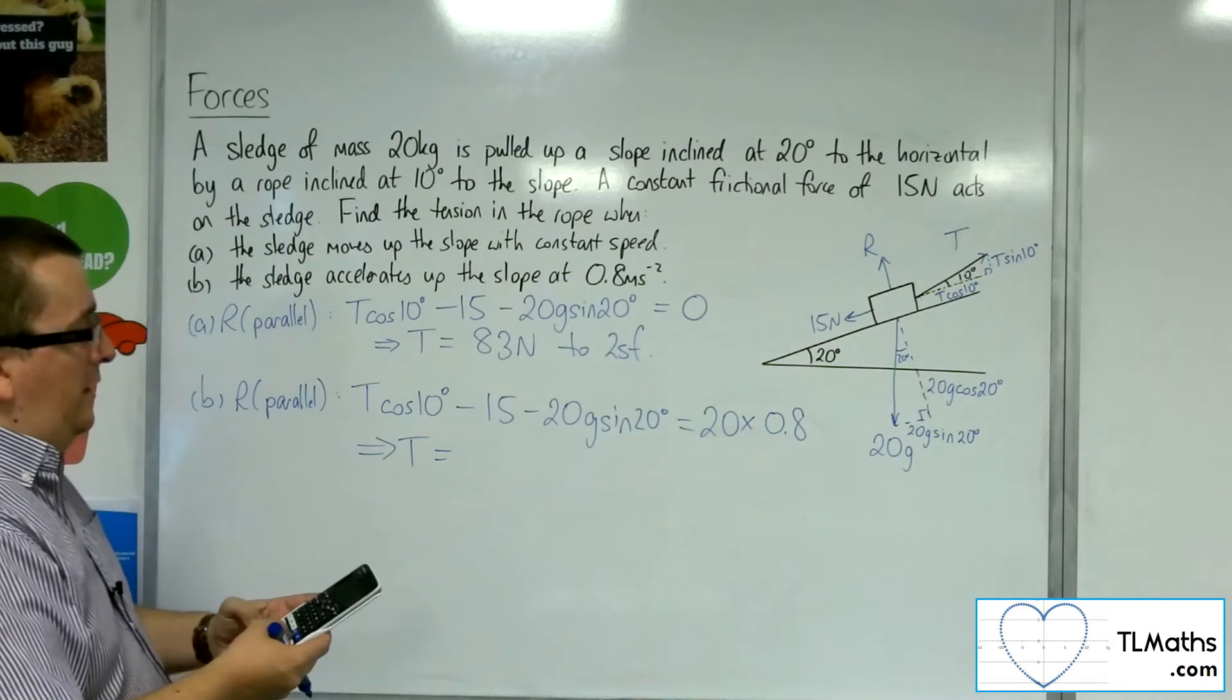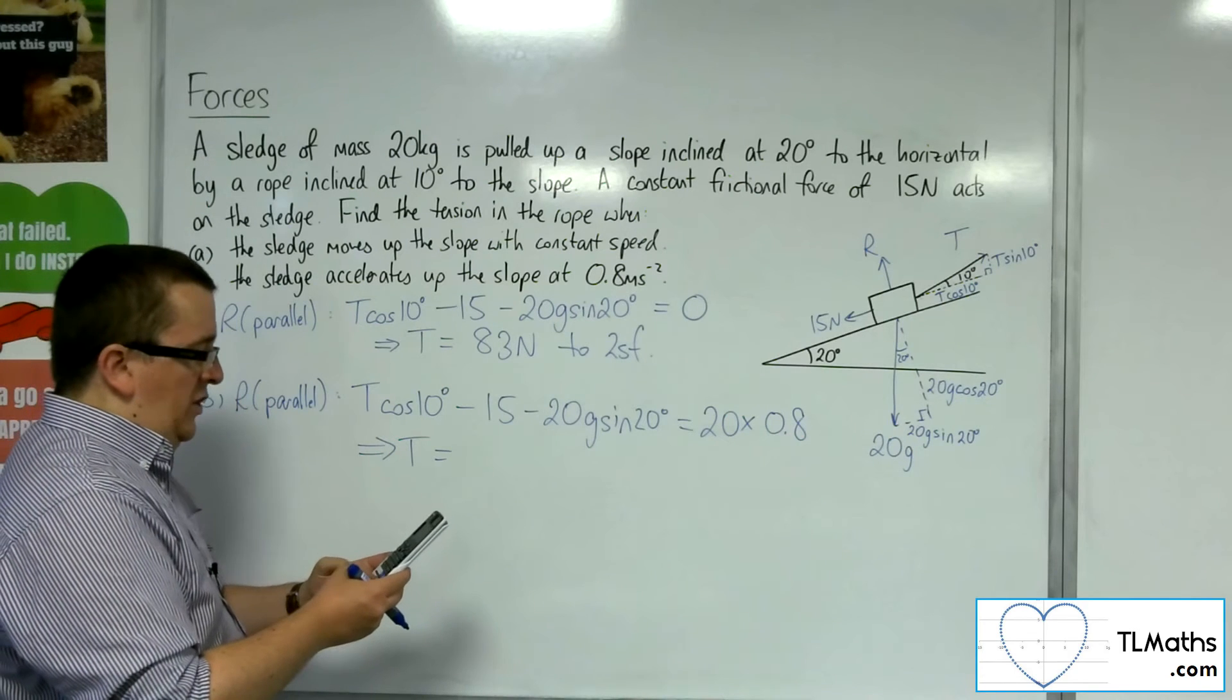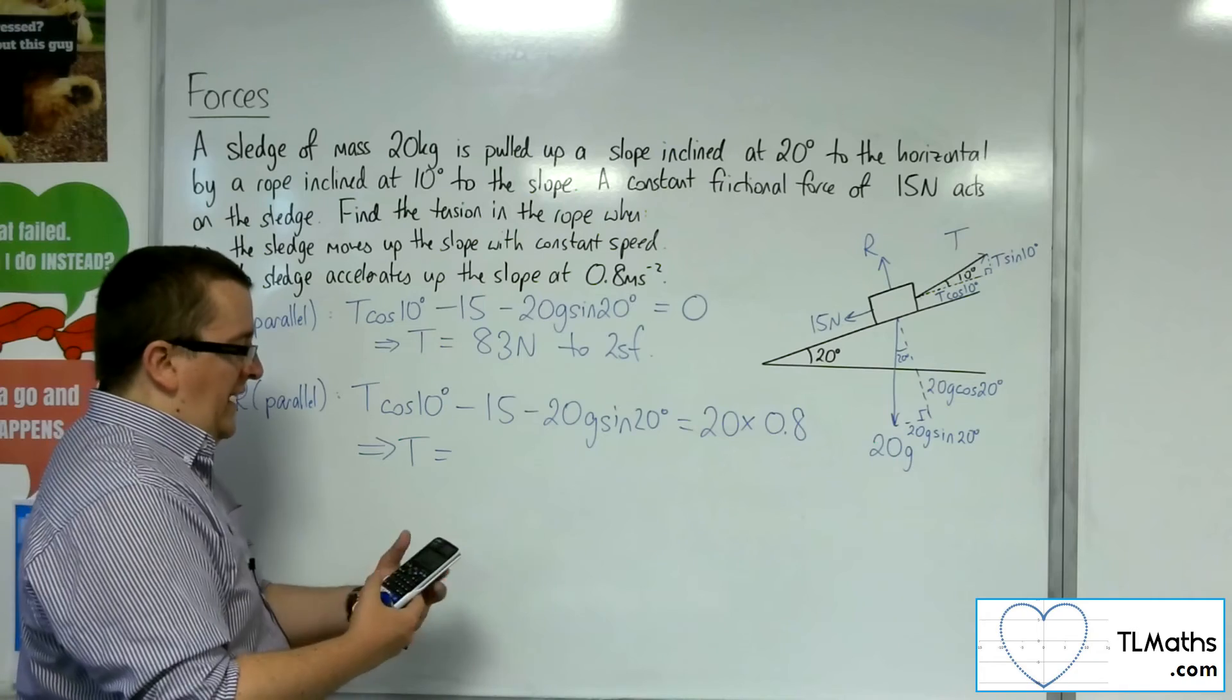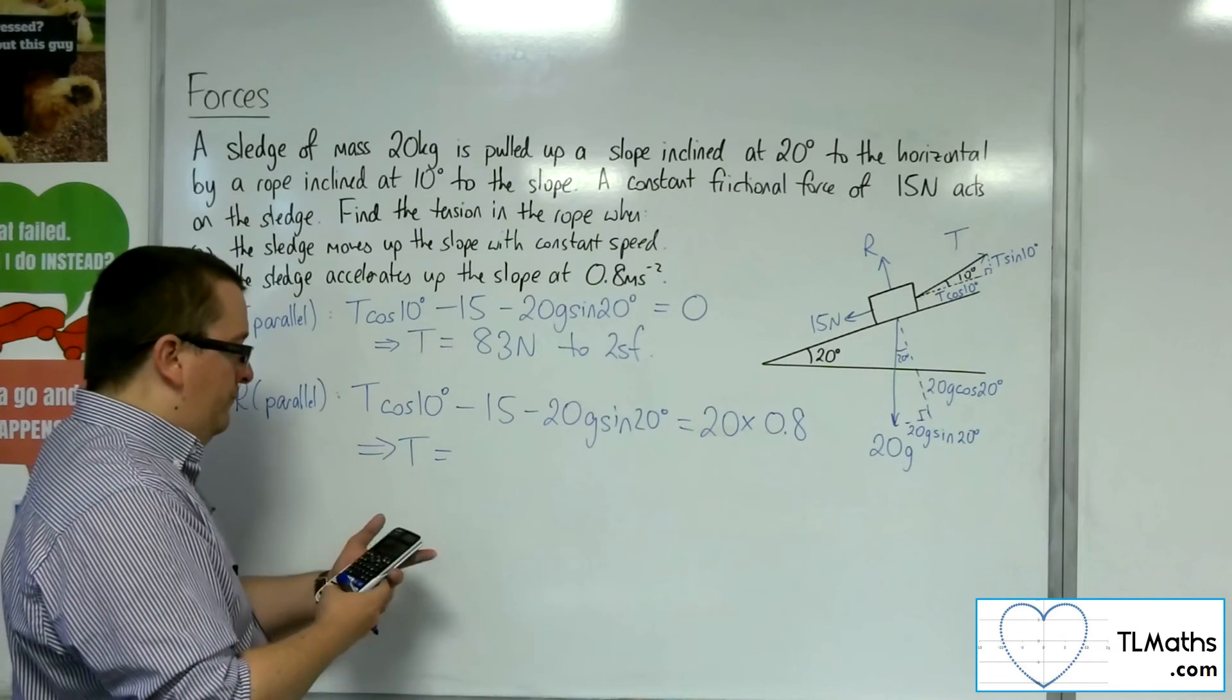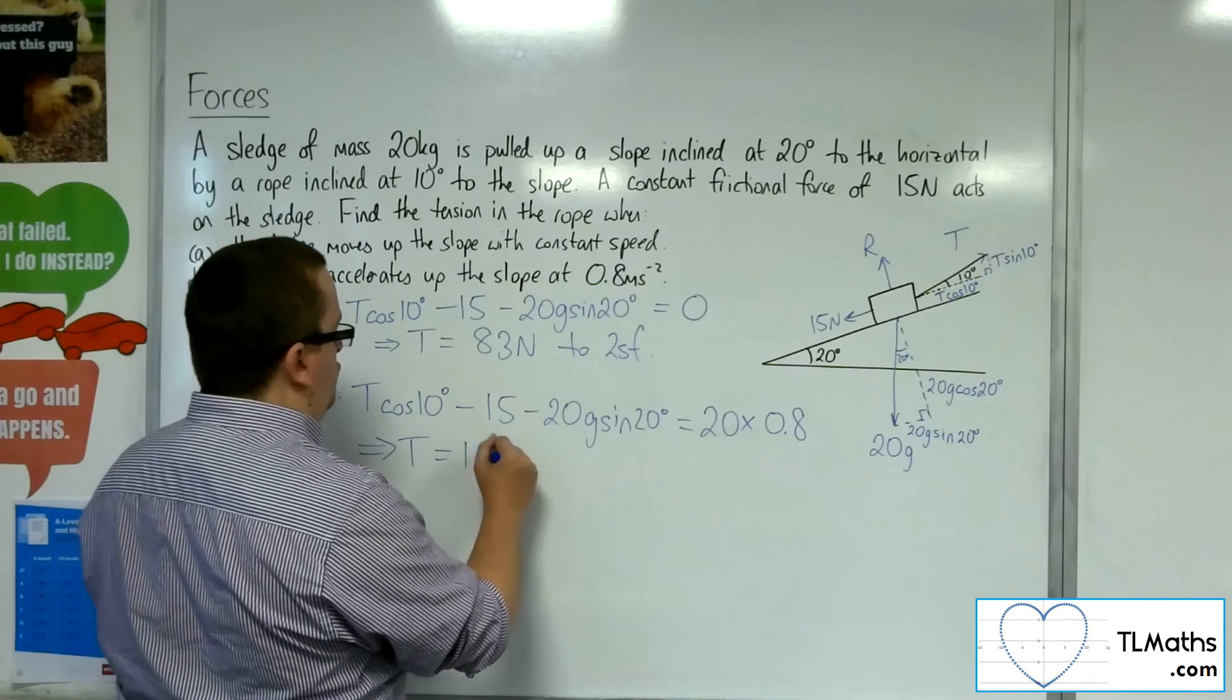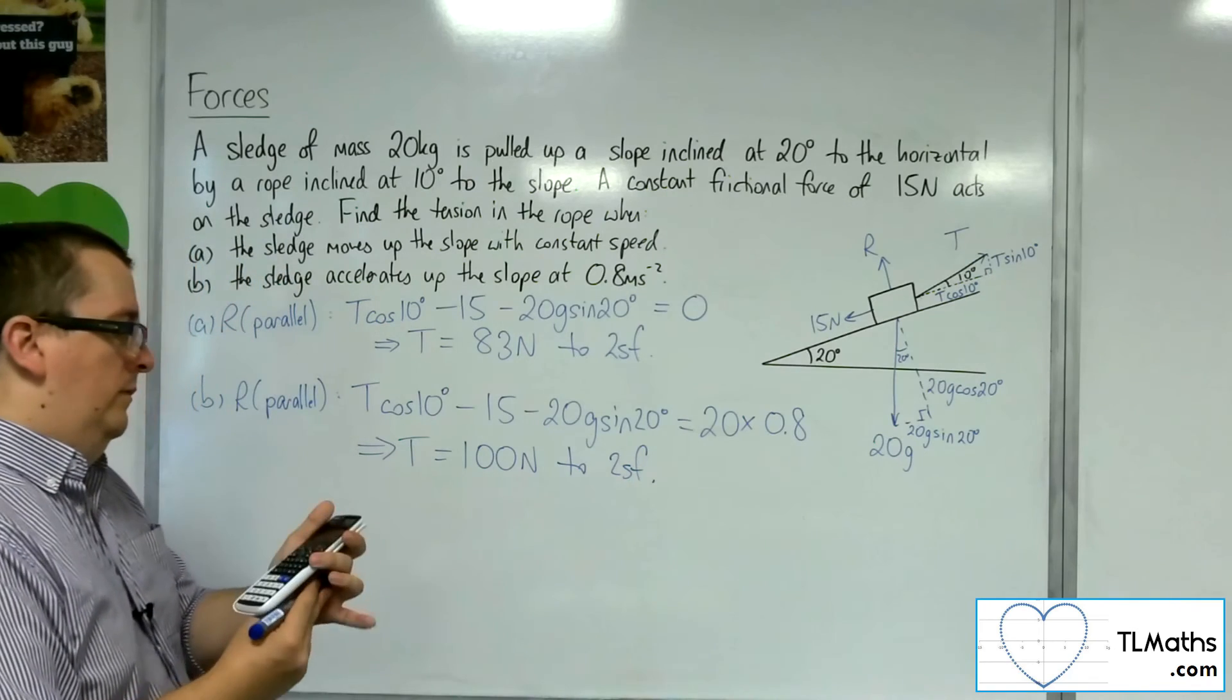So I've got the 20 lots of 0.8, so 16. I'm going to add on the 15 and the 20 times 9.8 times sine of 20. So that gives me 98.03. Then I'm going to divide by the cos 10. And we get 99.548. So it would be 100 newtons to two significant figures.